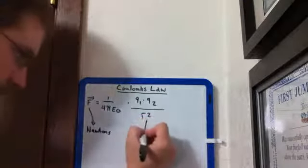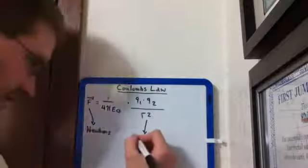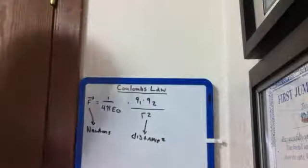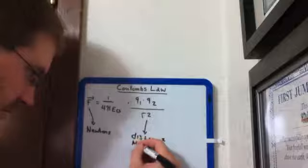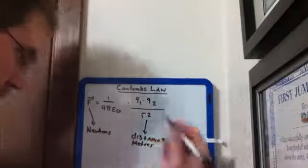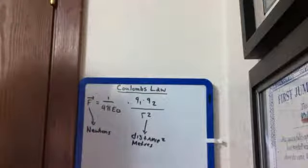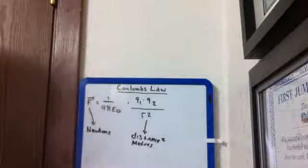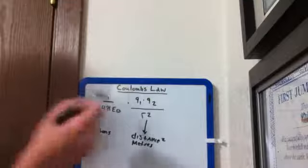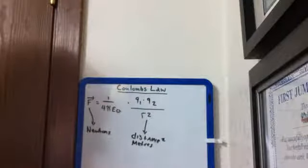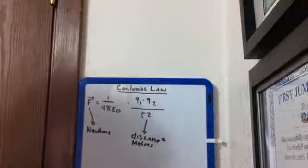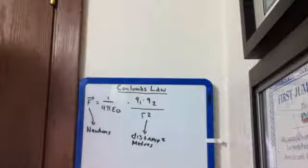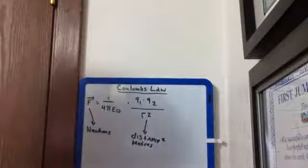This r squared over here is a pretty easy concept. This is the distance squared. Clearly, when we talk about subatomic particles, there's going to be fractions of a meter, and for most of our calculations of Coulomb's Law, we're actually going to have to use scientific notation because we're dealing with values that are incredibly small.